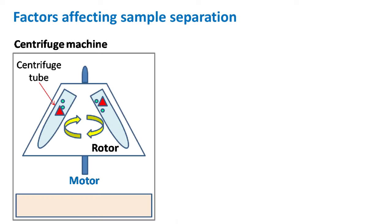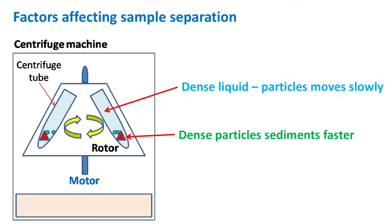Now, let's see the factors affecting centrifugation. It must be noted that dense particles sediment fast as compared to less dense particles. If the liquid in the centrifuge tube is dense, then the particles will move slowly. And higher the centrifugal force, faster the particles will sediment.